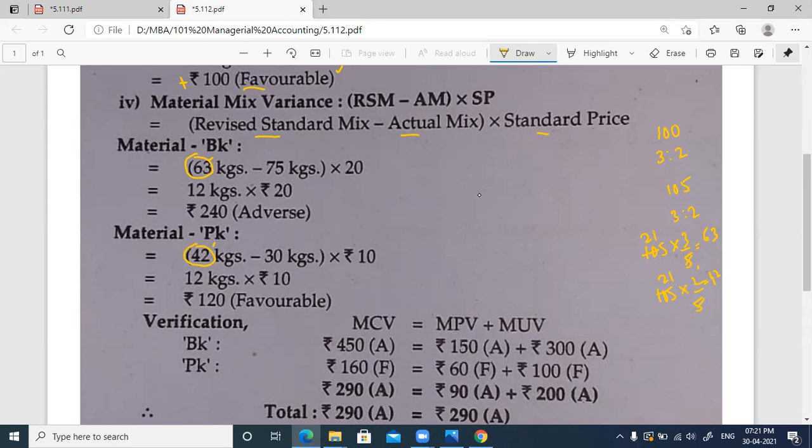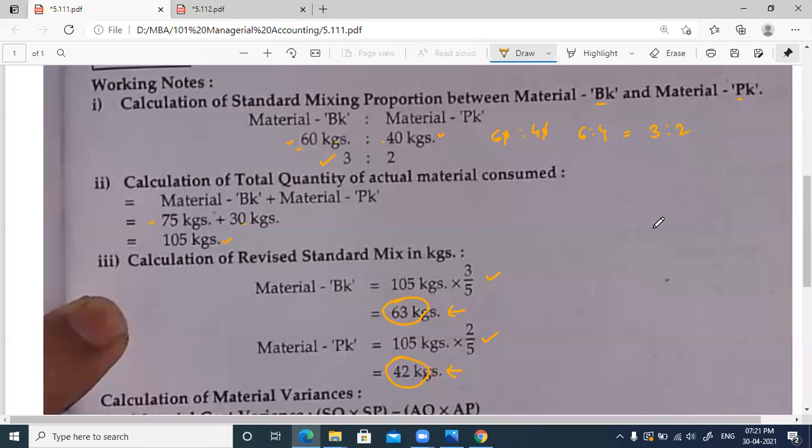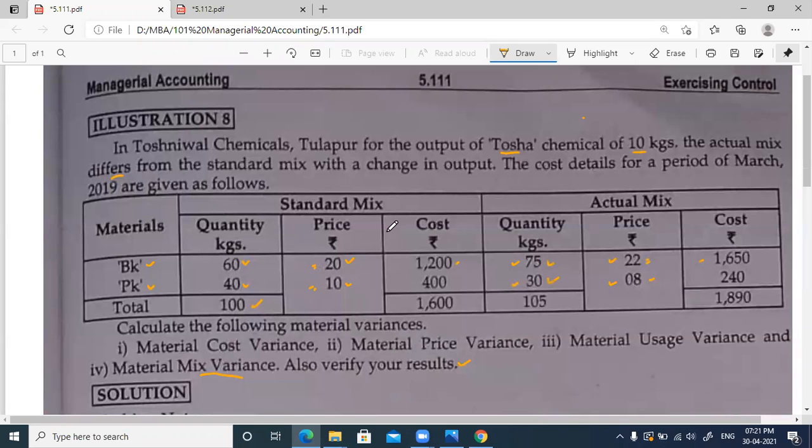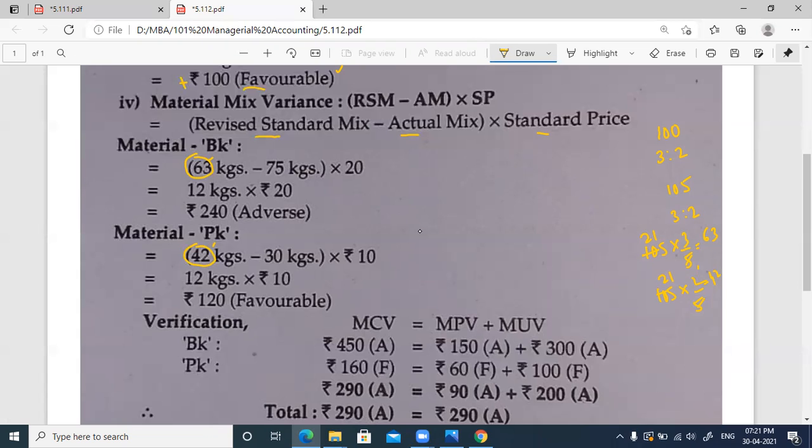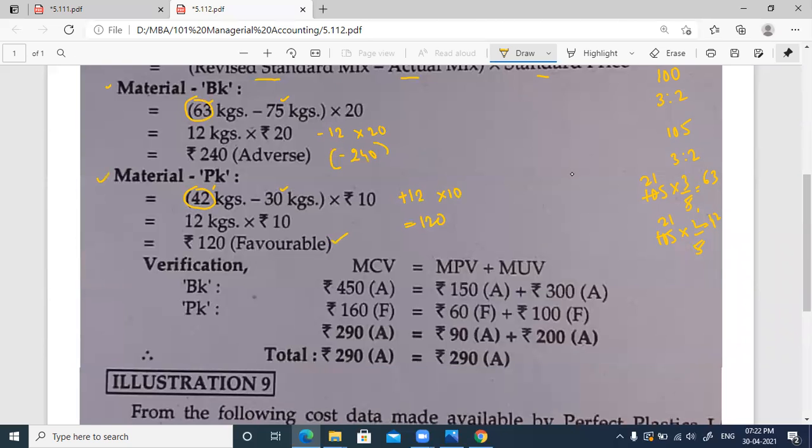Revised standard mix is 63 and 42 minus actual mix of 75 and 30. So 63 minus 75 is minus 12 into 20, which is minus 240, adverse for material BK. For material PK, 42 revised standard minus 30 actuals means we are saving 12 kgs. 12 into 10 is 120 favorable for material PK.